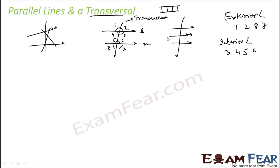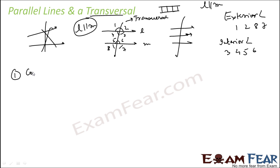So we have exterior angles and interior angles. There are two lines l and m, where l is parallel to m, and the transversal creates eight angles. Angles one, two, seven, and eight are exterior angles, and angles three, four, five, and six are interior angles. We have already read about corresponding angles, alternate angles, and alternate interior angles on the same side.